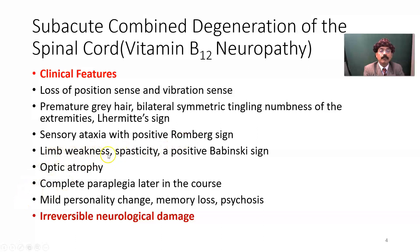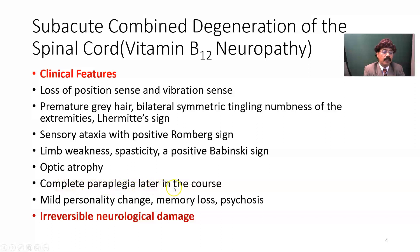Limb weakness, spasticity, and positive Babinski sign. In a positive Babinski sign, instead of the normal plantar flexion, you will get dorsiflexion. Optic atrophy may also be present, as the optic nerve may be involved. Dysarthria and complete paraplegia can occur in the later part of the course.